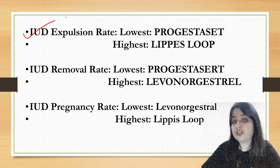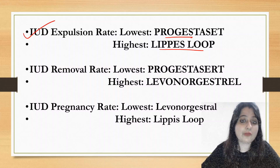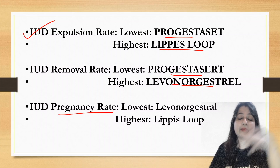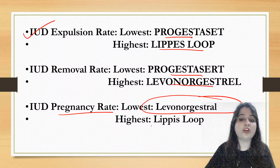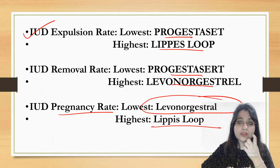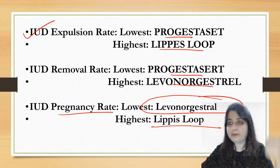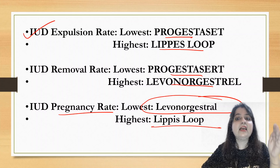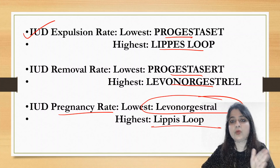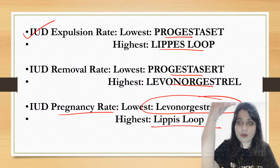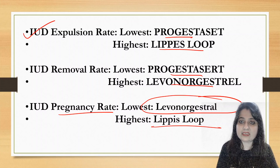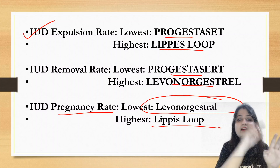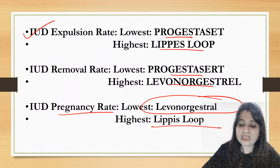One golden point — IUD expulsion rate: lowest is with Progestacert, highest is with Lipis loop. Removal rate is also lowest with Progestacert and highest with Levonorgestrel. But the pregnancy rate — what these devices are meant to prevent — is lowest with Levonorgestrel and highest with Lipis loop. In summary: first generation includes Lipis loop and Grafenberg ring; second generation includes copper devices — straight complete T is Copper T380A, curved with copper only on vertical stem is Nova T, U-shaped is Multiload; Mirena is curvy white, no copper wire; Progestacert is straight white T, no copper wire.